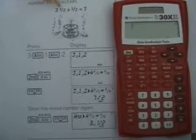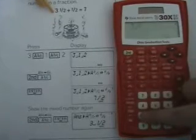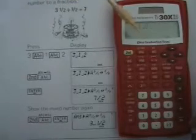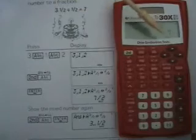Now, if we wanted to solve this problem, 3 and 1 half divided by 1 half, we would enter it exactly as we see it. So we would go 3 ABC 1, ABC 2, which would give us 3 and 1 half, and we would hit the division symbol, and then 1 ABC 2 equals, which would give us 7.